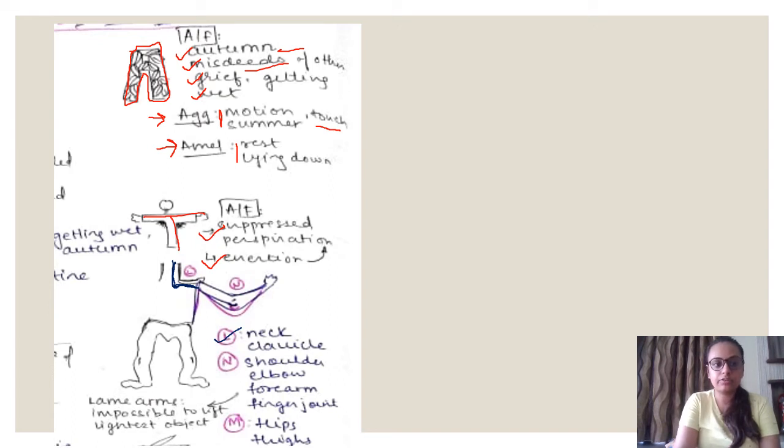Then we go to N. I'll use red for N. You can see here this is an N. So you get my point. This is the N and N is showing us shoulders, elbows and finger joints.